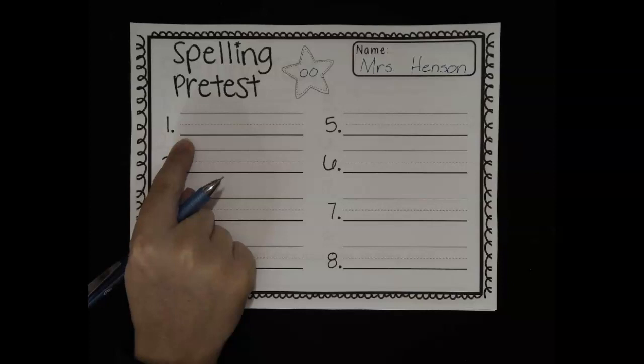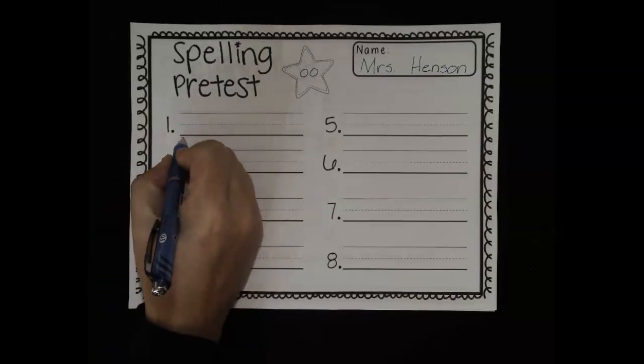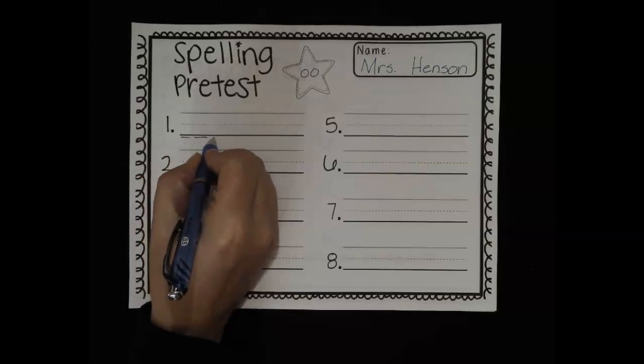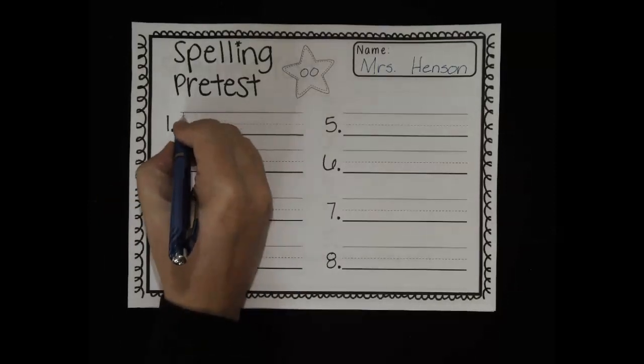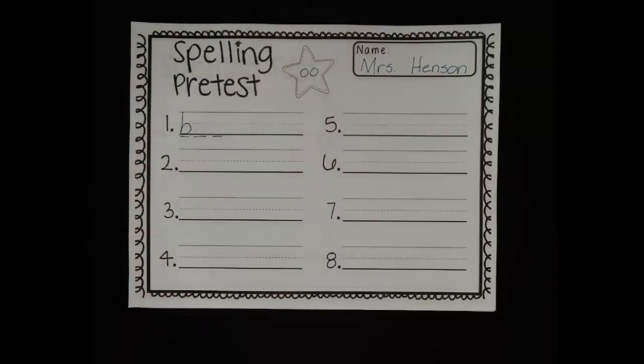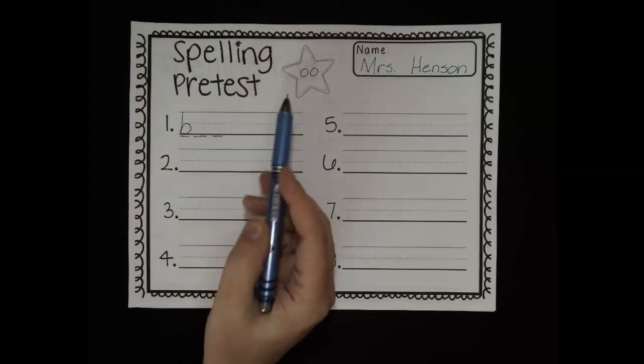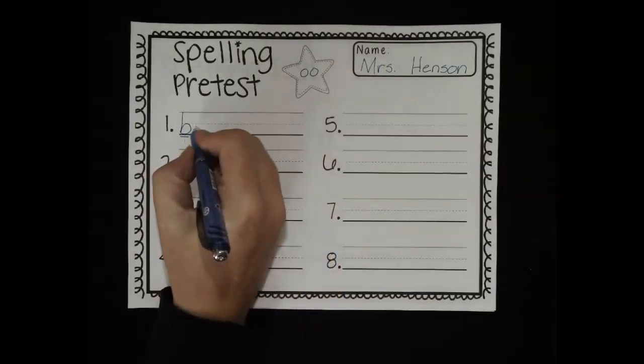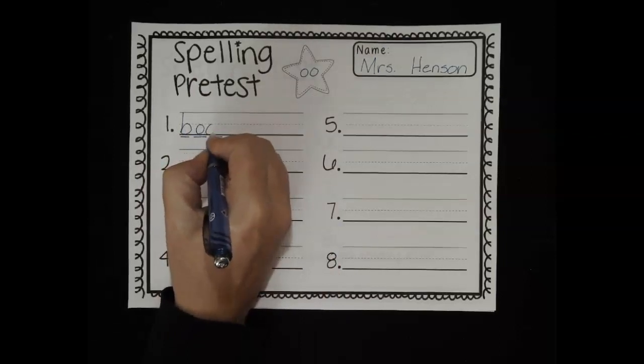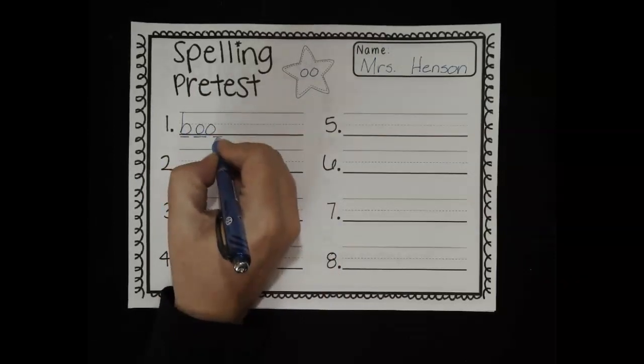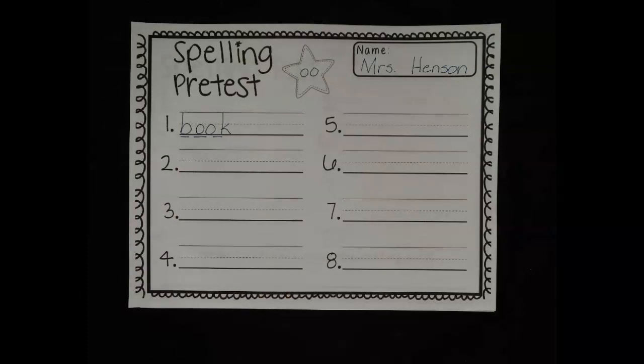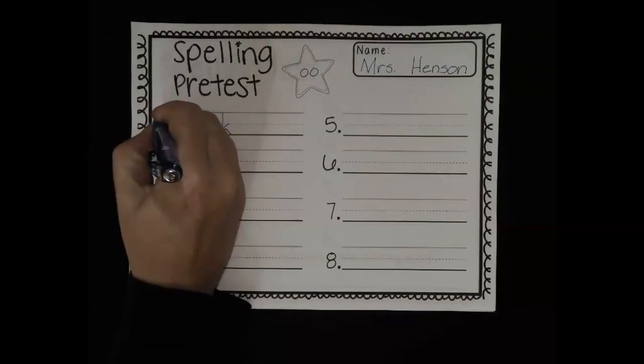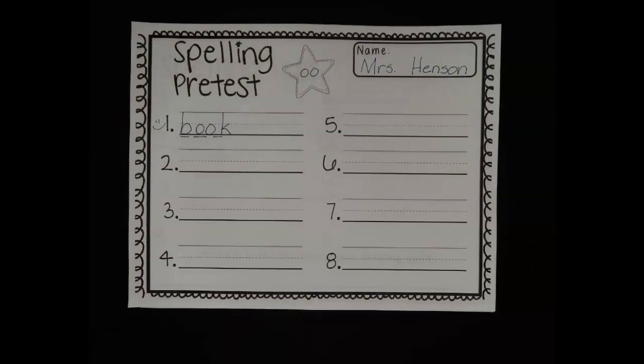Your first one is book. Let's do this one together. I hear buh, uh, kuh. I hear three sounds. I know the first one, buh. That's right, it's that B. Buh, uh. Ooh, we just heard. What are those two letters that say uh? O. O, you got it. And I heard one more sound. K. This time it's a K. Book. B-O-O-K. Good. Put a smiley face by that one. All right, let's keep sounding out the rest of them. Just do your best job sounding them out.